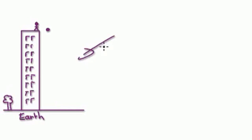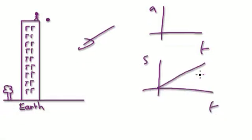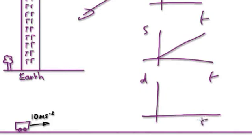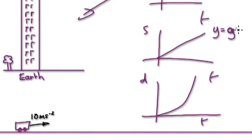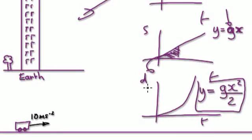In this situation, the acceleration-time graph looks flat, the speed-time graph is a straight line. The line here is Y equals G times X — that's acceleration times time. If you work out the area underneath that, it represents distance. The equation for the distance-time line is Y equals G times X squared over 2. So remember that formula: H equals G times T squared over 2.